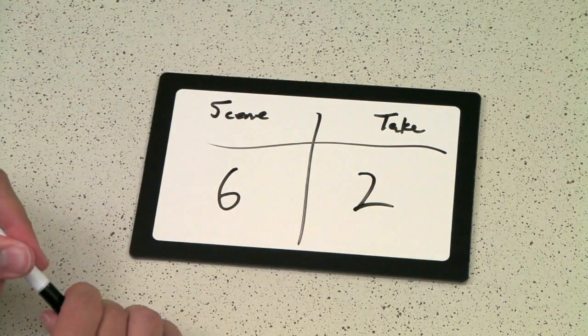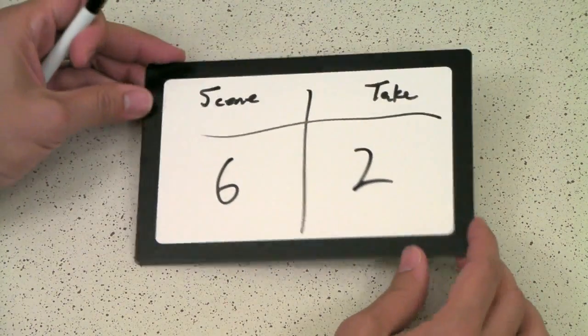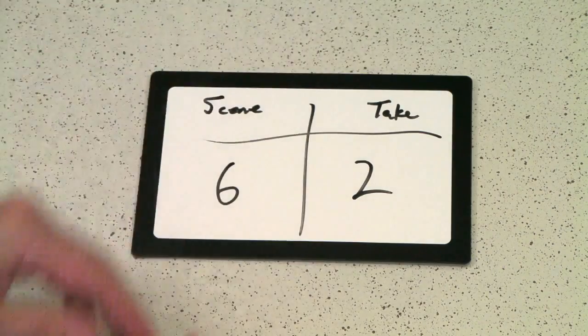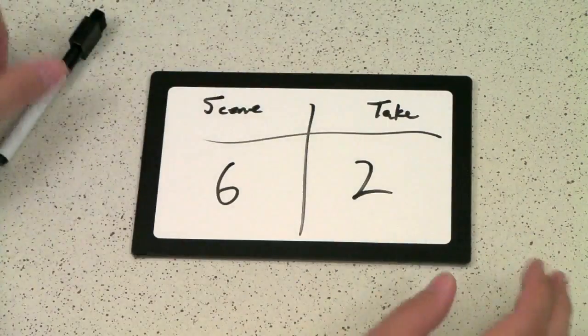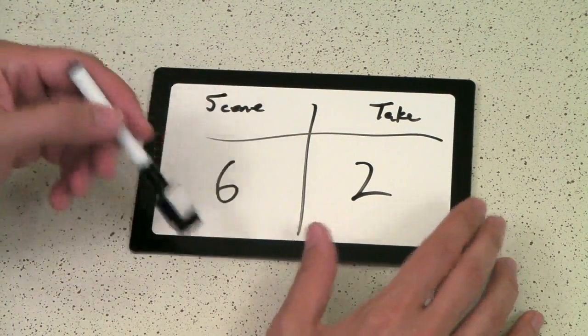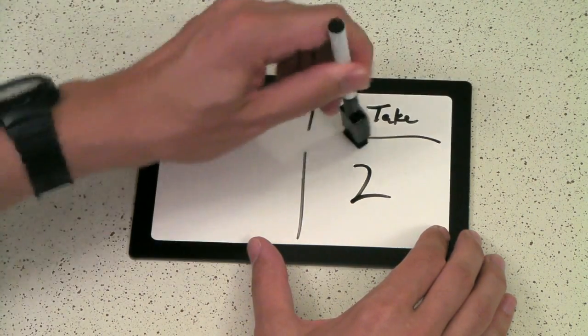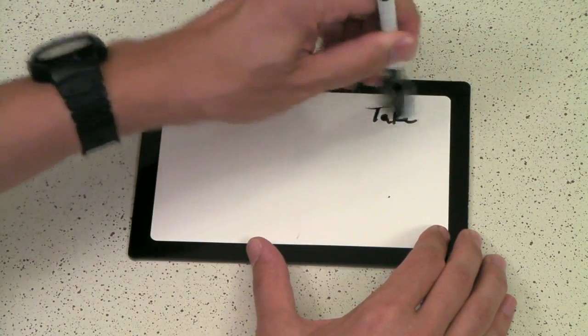You just put it right there and now you've got a very inexpensive slate. Of course, if you need to sync sound, you can always snap your fingers or clap your hands and do a nice little sync marker.